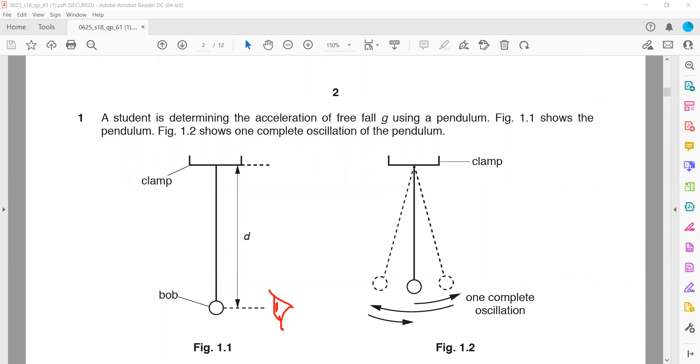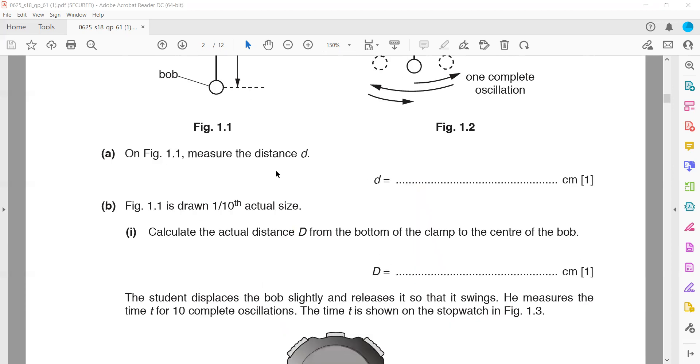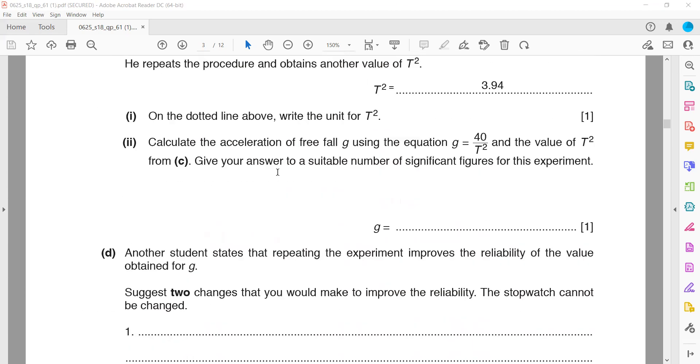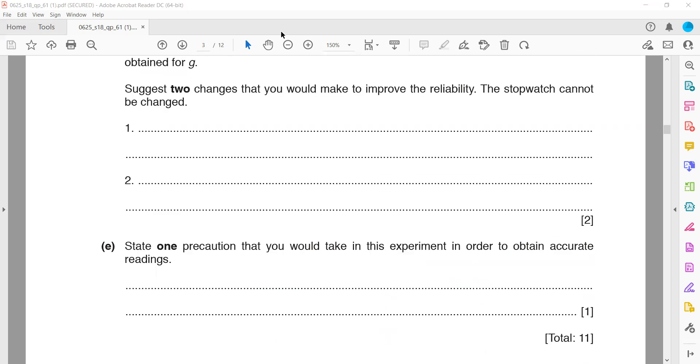We should always look perpendicular. We should reset the stopwatch as we are measuring time intervals. The stopwatch must be reset. We should mark the mean and extreme positions—as this pendulum is vibrating, we should have indication that this is the mean position and the other is the extreme position.